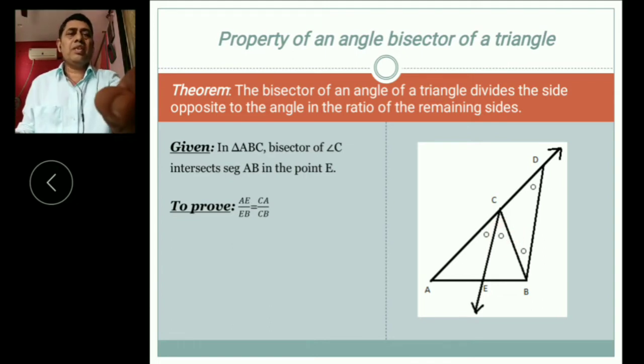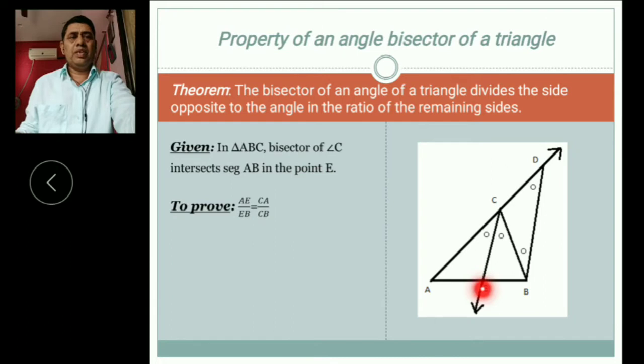So I write in a given: In triangle ABC, bisector of angle C intersects segment AB in the point E. E is between A and B.